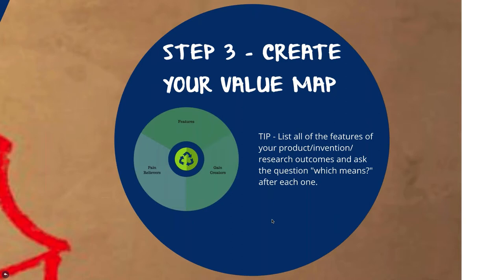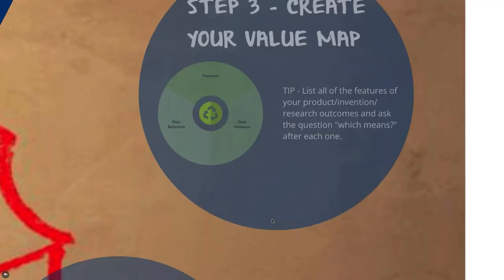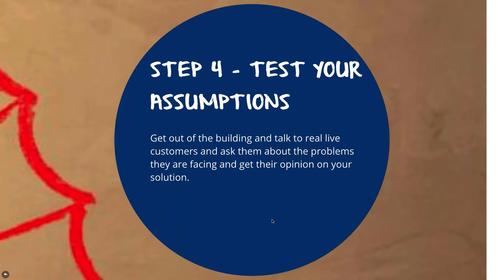Next, create your customer profile: identify what jobs they're trying to get done, what internal and philosophical problems they're trying to solve. There's a download with trigger questions to help with this exercise. Then list all the features of your research and keep asking 'which means?' after each one — you'll eventually identify pain relievers and how your research aligns with solving internal problems or supporting philosophical values. Step four is the most important: get out of the building and actually talk to real stakeholders. All the exercises up until that point are just assumptions — you need to go and speak to real people and validate them.